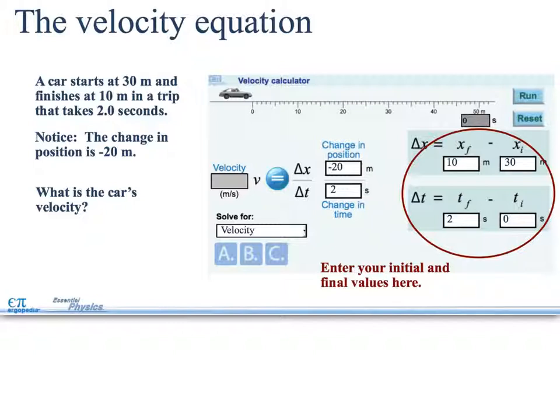What is the velocity? Well, for the first one, we have xf being 10 and 30. So you finished at 10 and he started at 30, and it's a final time of 2 seconds and 0 seconds.